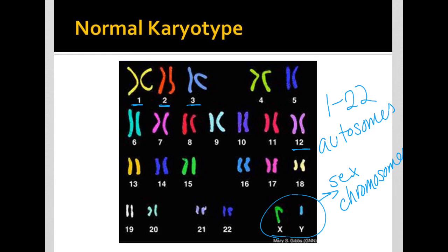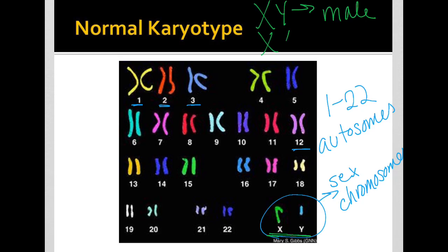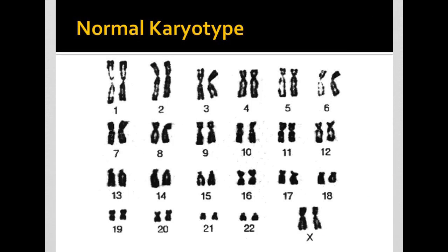XY chromosomes indicate male, and XX indicates female — we'll look at a couple of exceptions to those in a different video. This karyotype shown here is a female karyotype because it has two X chromosomes. You should be able to look at a karyotype, obviously know that it's a karyotype, and identify if it is male or female.